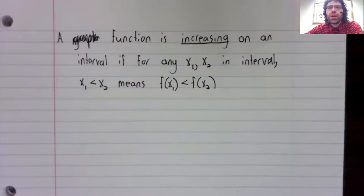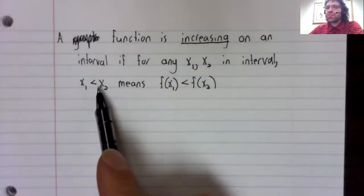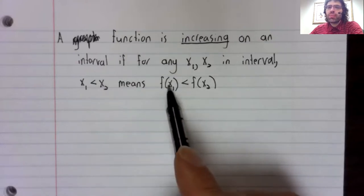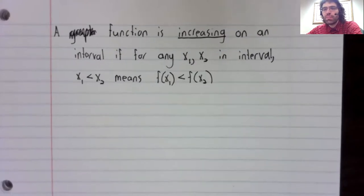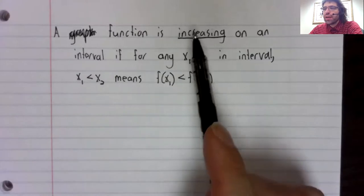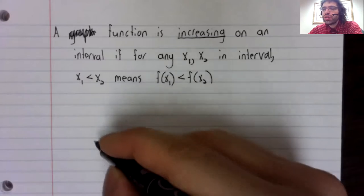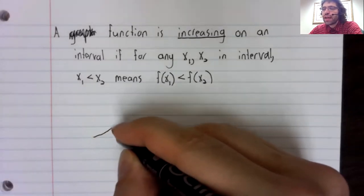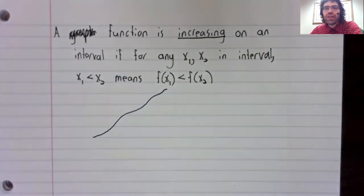If for any two numbers in the interval, if the first number is less than the second, then f of the first number is less than f of the second number. And this shows that functions are increasing literally if their graphs increase as we go from left to right.